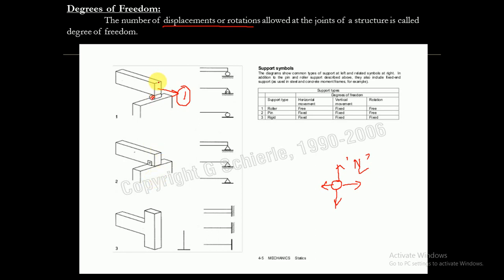A roller can also rotate, giving another degree of freedom. For a pin-jointed support, it cannot move in any direction but can only rotate, so the degree of freedom is 1. For a fixed support, it cannot move horizontally, vertically, or rotate, so the degree of freedom is zero. Degree of freedom is the number of displacements or rotations allowed at a joint.